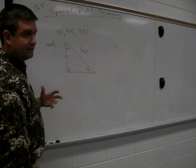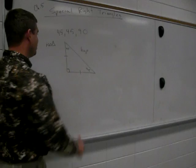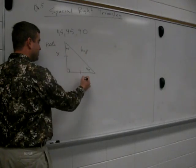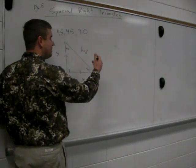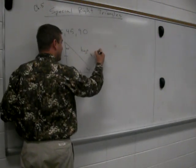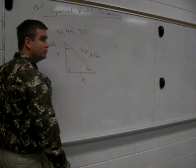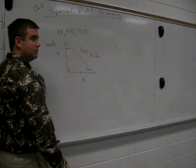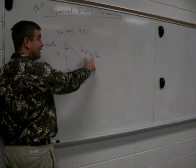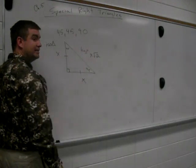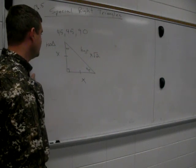The formula for a 45-45-90 triangle is that if the legs are x, a certain length, then in order to find the hypotenuse, we take that length and we multiply it by root 2. So if this leg is 6 and this leg is 6, then this hypotenuse would be 6 root 2.